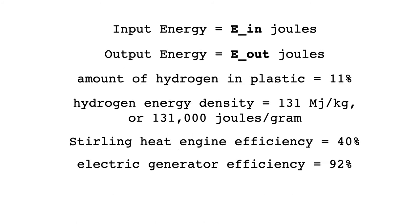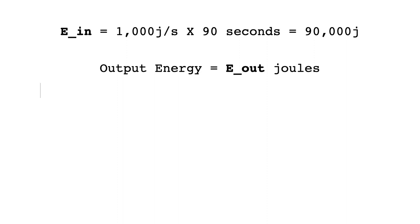In a test done at the University of Oxford, almost 97 percent of the hydrogen in a small quantity of plastic was extracted within 90 seconds. For now, let's be optimistic and use those results for the input calculation. Starting with the energy density of hydrogen, we'll calculate the output energy for a small quantity of plastic, say 300 grams.